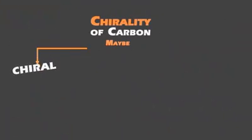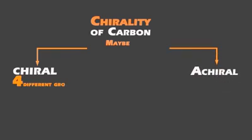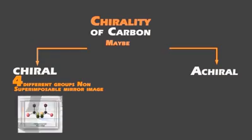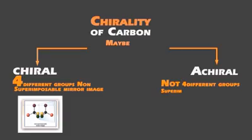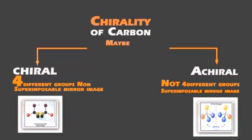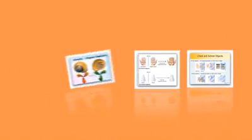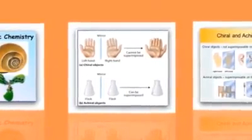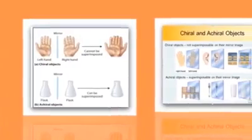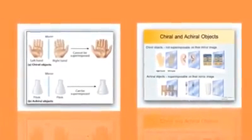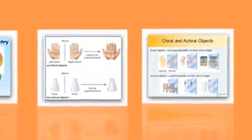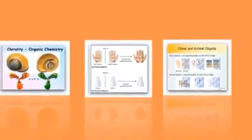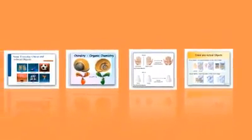Chirality of carbon: a carbon may be chiral or achiral. A chiral carbon has four different groups and its mirror image is non-superimposable. An achiral carbon does not have four different groups and its mirror image is superimposable. For example, the left hand and right hand are chiral objects because they cannot be superimposed, but a plus sign is an achiral object because it can be superimposed.